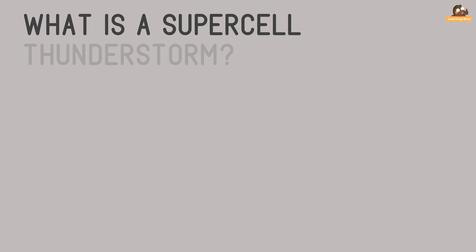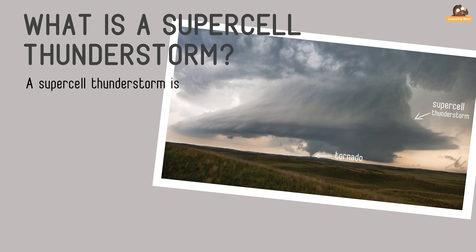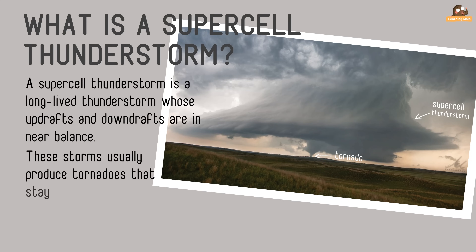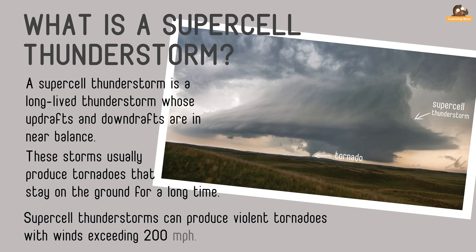What is a supercell thunderstorm? A supercell thunderstorm is a long-lived thunderstorm whose updrafts and downdrafts are in near balance. These storms usually produce tornadoes that stay on the ground for a long time. Supercell thunderstorms can produce violent tornadoes with winds exceeding 200 miles an hour.